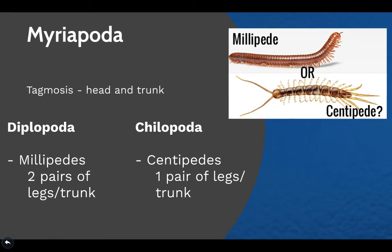The next subclade is Myriapoda. Note that 'poda' refers to feet. Myriapoda also undergoes tagmosis, forming a head region and a trunk region. The Diplopoda — millipedes — have two pairs of legs per trunk segment ('di' meaning two, 'poda' meaning feet), visible in the image. The Chilopoda — centipedes — have one pair of legs per trunk segment, as seen in the corresponding image.